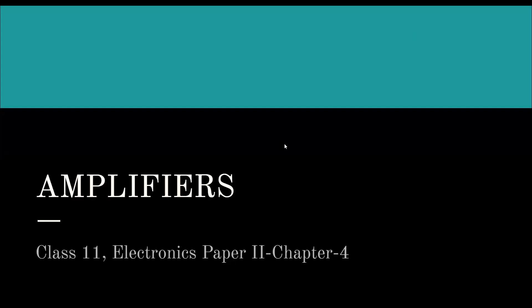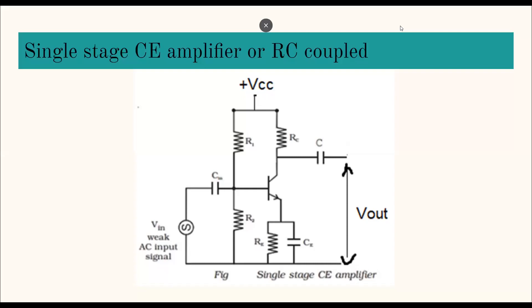Welcome back students. Today we will be discussing the next part of the chapter on amplifiers. We have already done three parts — please check the playlist, Class 11, for Part 1, Part 2, and Part 3 of amplifiers. In the last class we covered the single stage CE amplifier, also known as the RC coupled amplifier, including its working, gain equations, and frequency response.